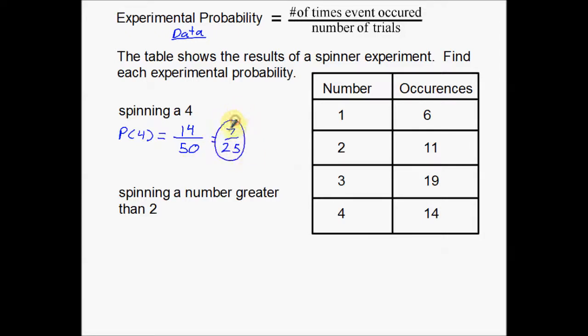So the probability of spinning a 4 using this experimental probability is 7 out of 25 times. Now what you could also do is divide that and make that into a decimal. Decimal-wise, that would be .28 or you could say that this could be 28%. There's a couple different ways you can write probability. Traditionally, we write them as fractions, but they can also be written as decimals or even percents.